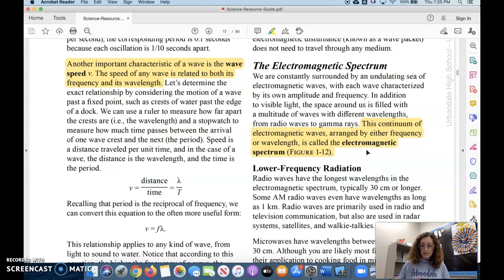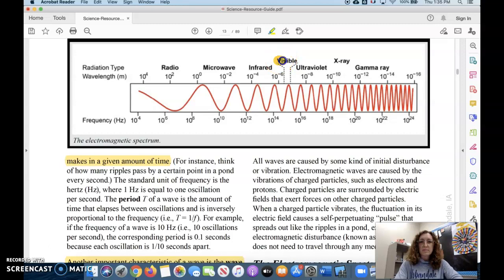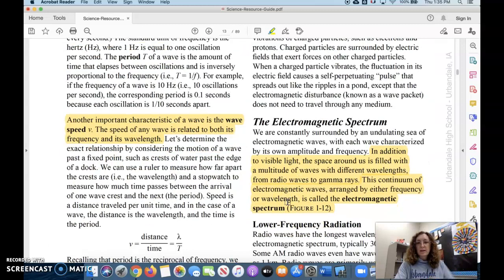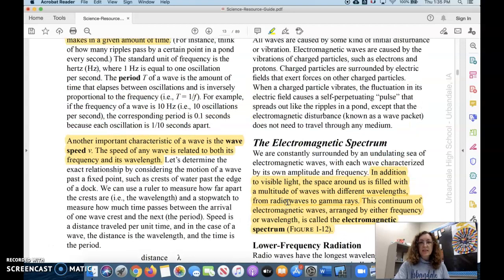You can see some of the light, that is the visible light. And then if I go back up here, remember, the visible spectrum is tiny in comparison with all of the wavelengths that are out there. The continuum, this chart up here, 1-12, this is called the electromagnetic spectrum.